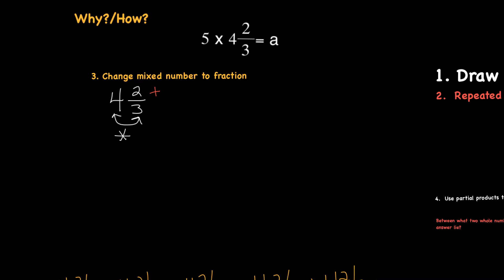So our third strategy is to actually take that mixed number, the 4 and 2 thirds, and turn it into just a fraction. So how do we do that? We take this whole number, 4, and we multiply it times 3.